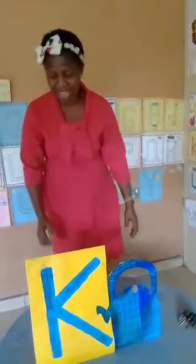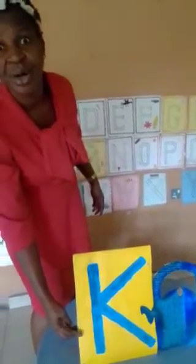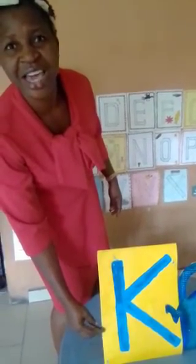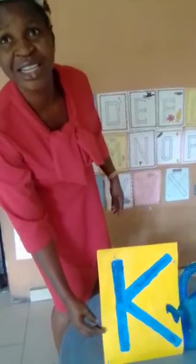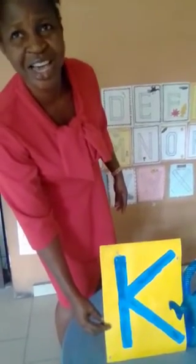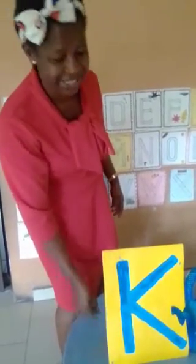Everyone read it again. Let me read it again. One letter is this. Say it. Letter K. K. K as in Kettle. K as in Kettle. K as in Kee. K as in Kee.